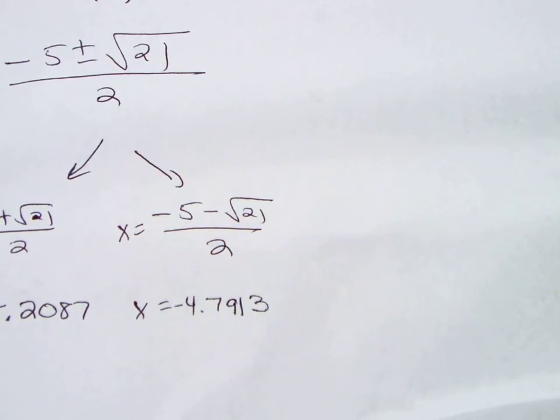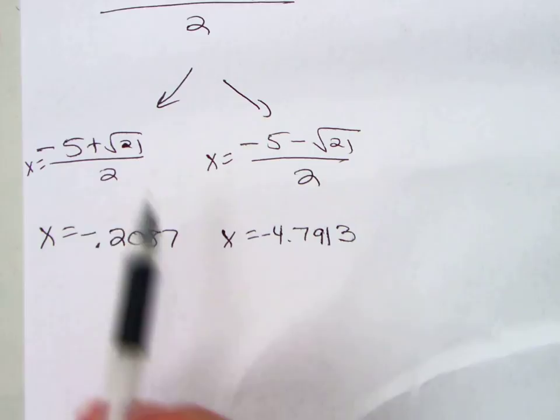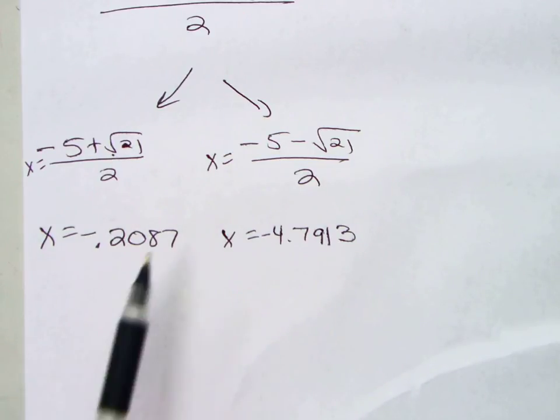So, those are my decimals. These are my non-decimals. If I'm just asking you to solve it, you can leave the radical. I'm just asking for you to solve it. You can leave it like this. If we're graphing, you're going to need to actually find the decimal.